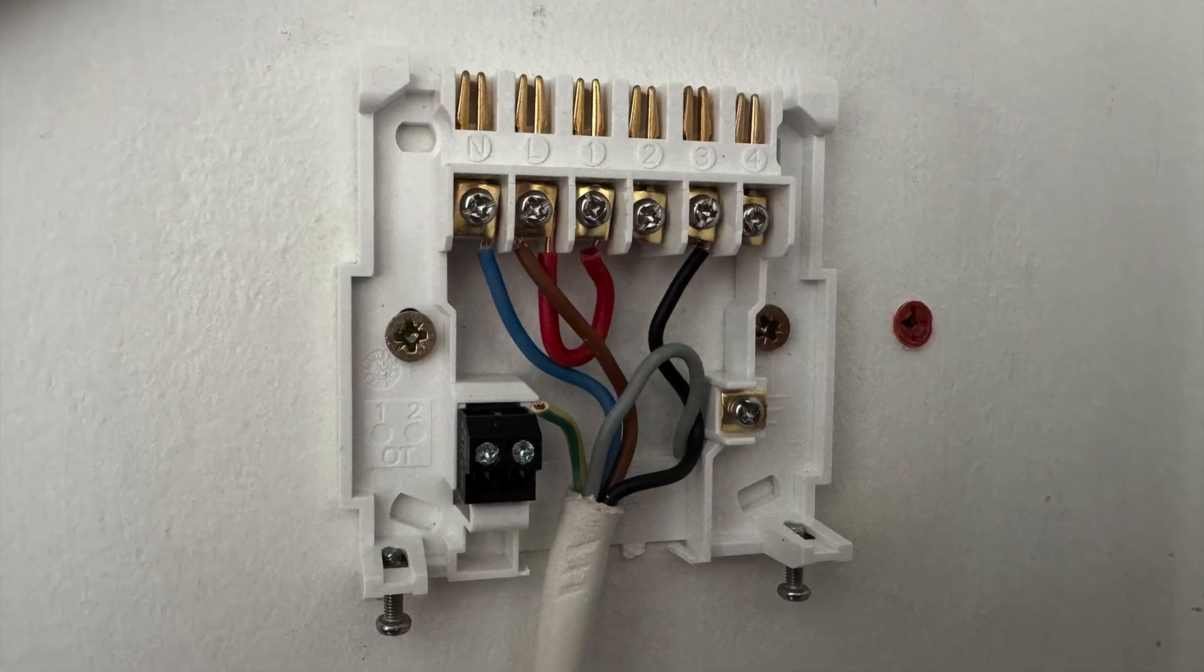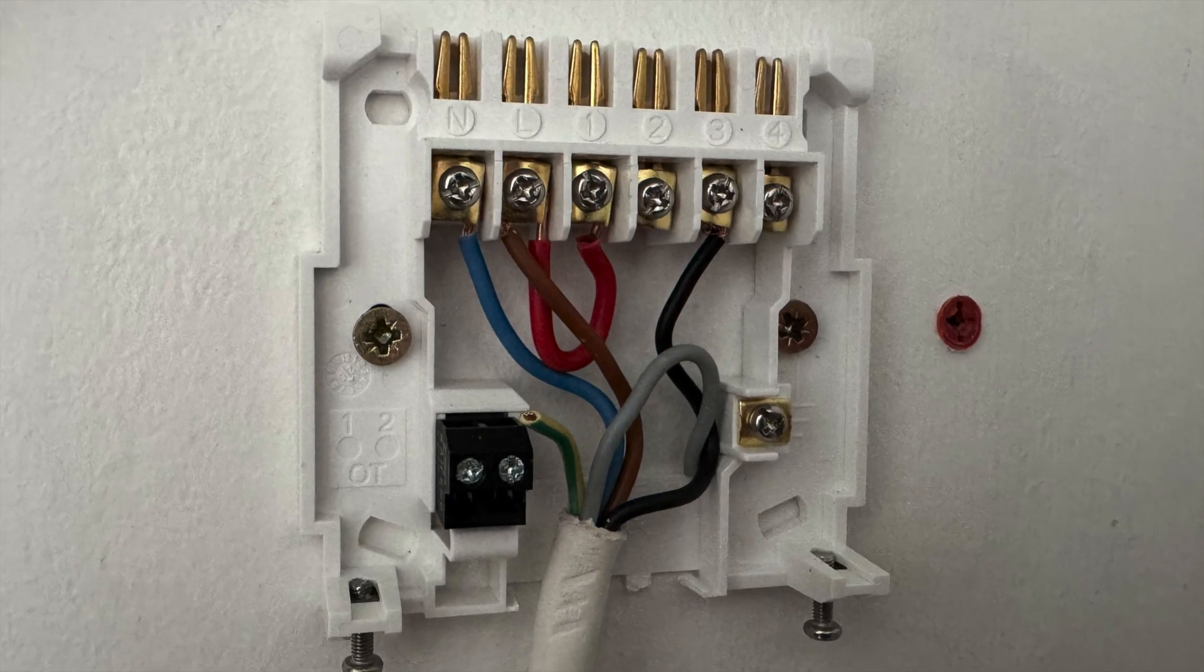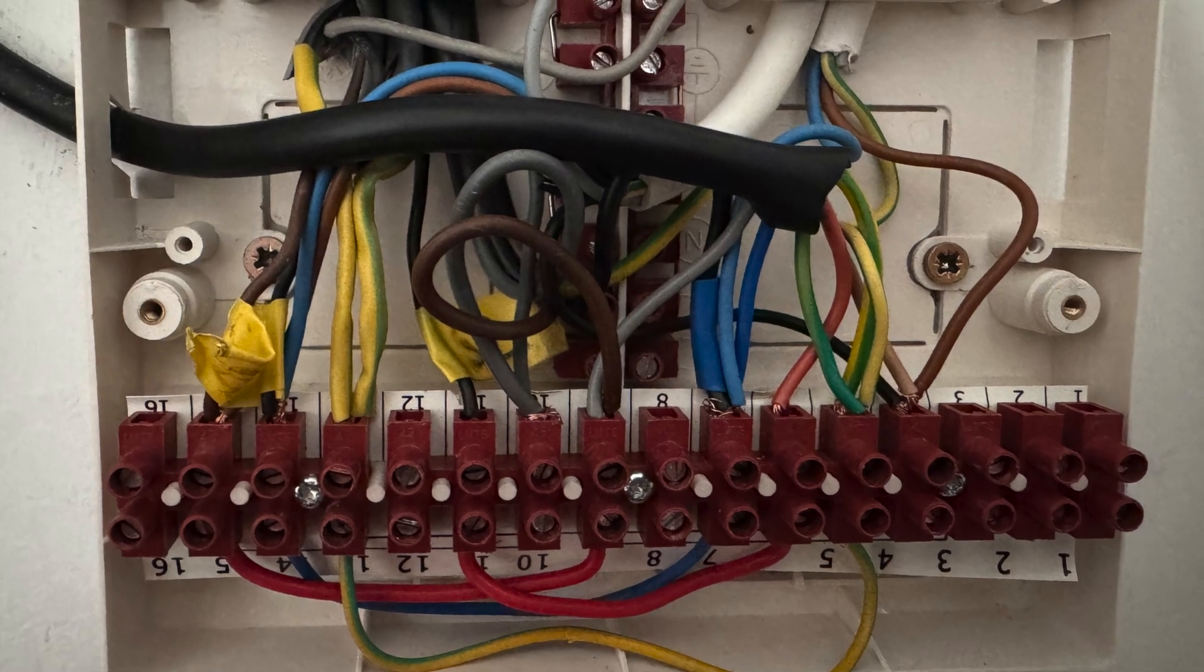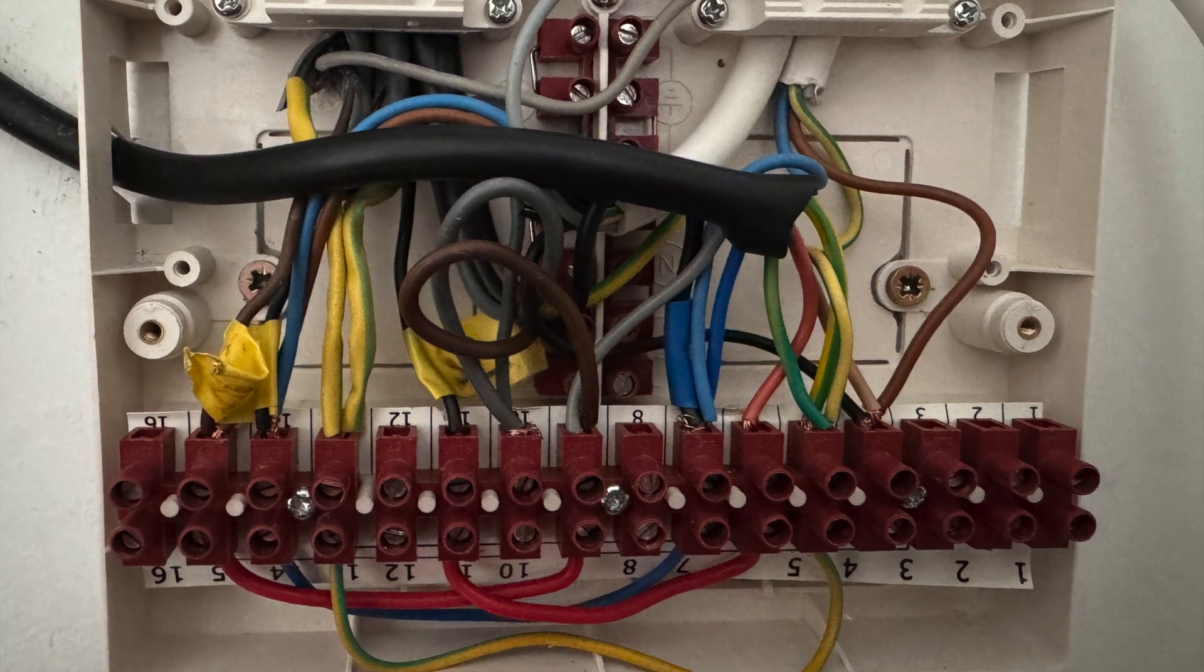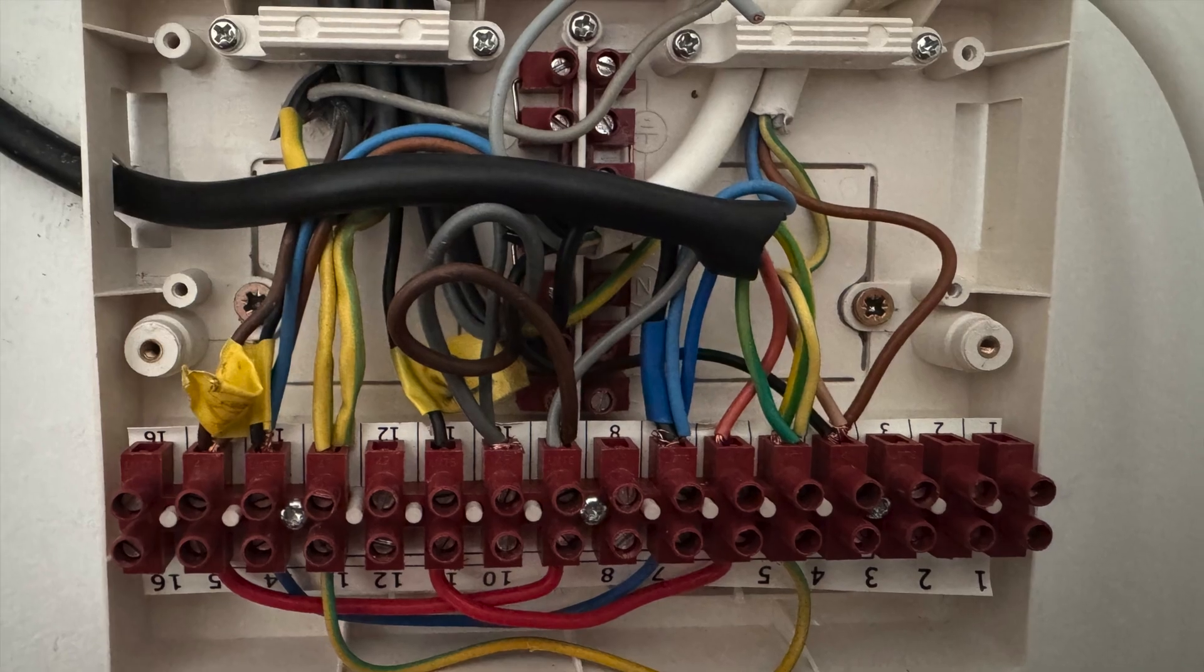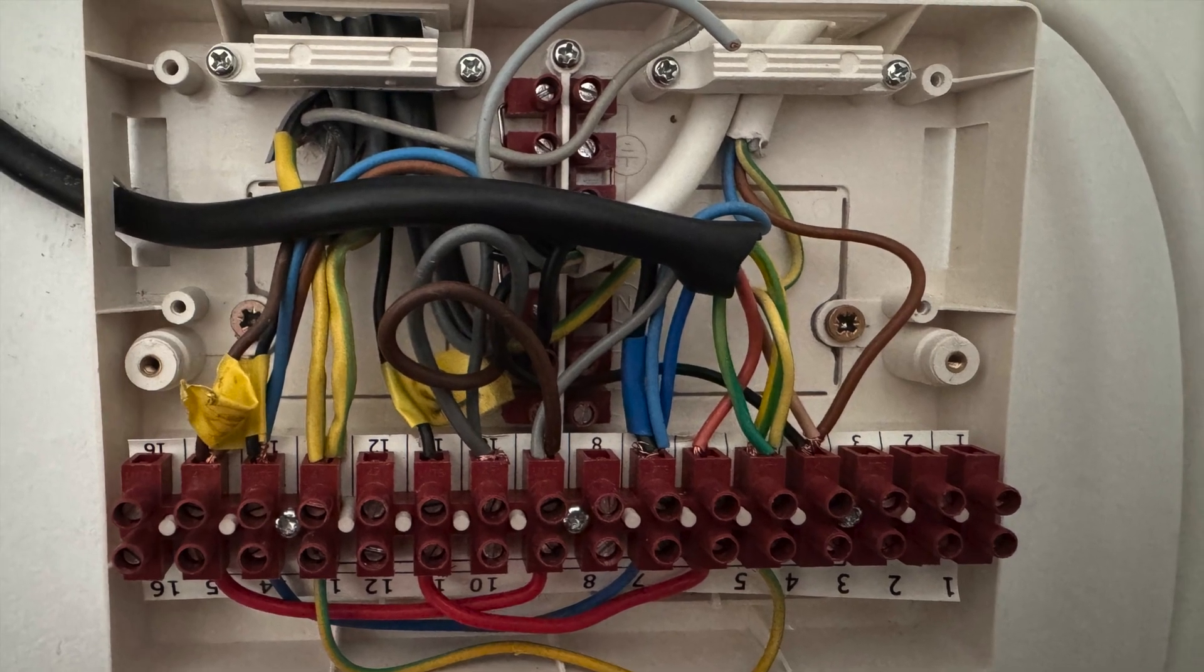That's the receiver back plate all wired in, and the wiring center is all wired in. Let's go and disconnect our lock-off device on the MCB so we can test it all.